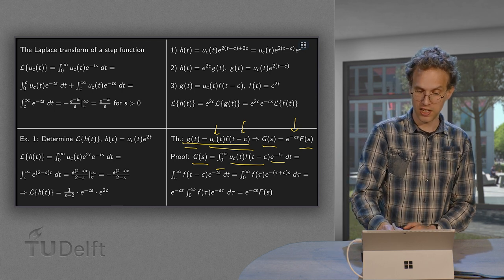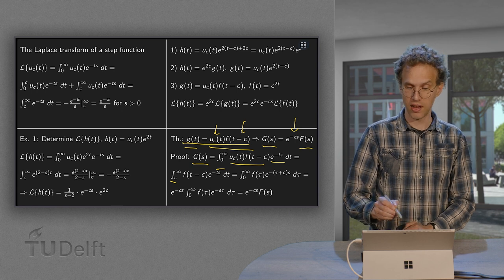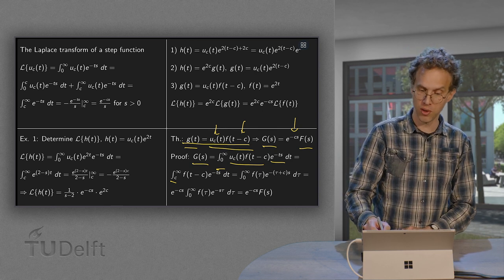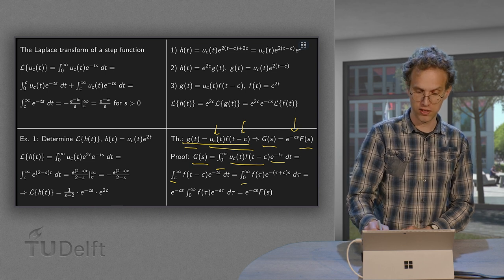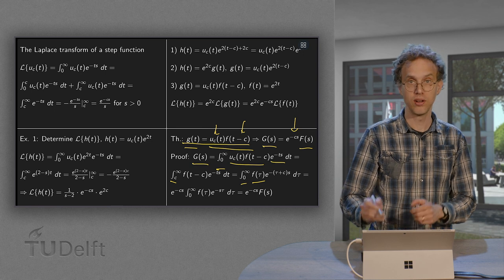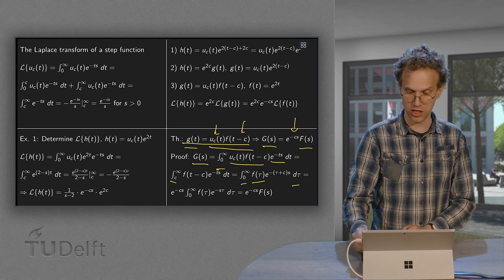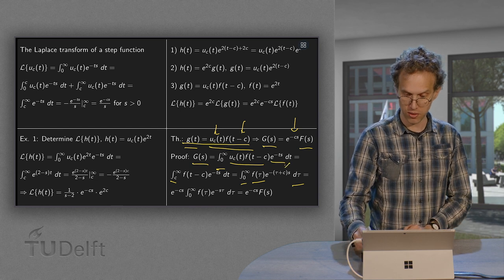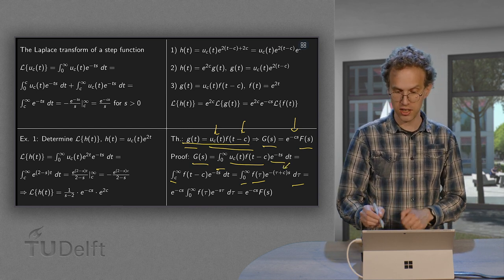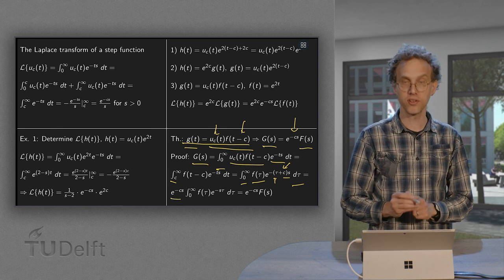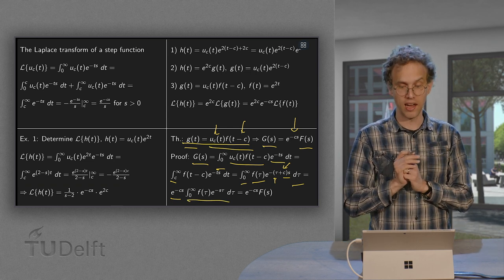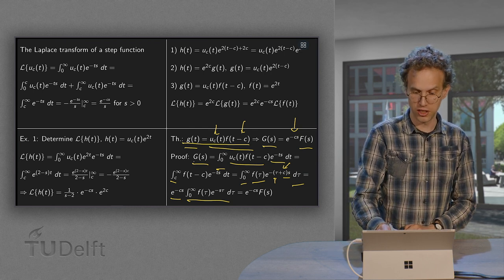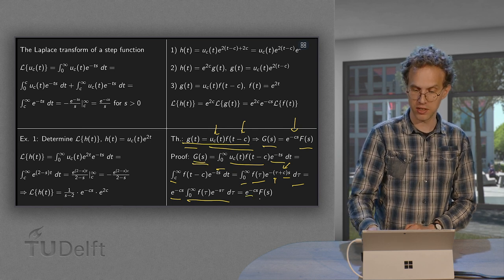The u_c starts the integral at c. We substitute τ = t minus c as a new integration variable. Then τ runs from 0 to infinity, f(t-c) becomes f(τ), and dt equals dτ. Since t = τ + c, the exponent becomes minus s(τ + c), so we can factor out e^{-cs} in front. The remaining integral is simply the Laplace transform F(s). Therefore G(s) equals e^{-cs} times F(s).